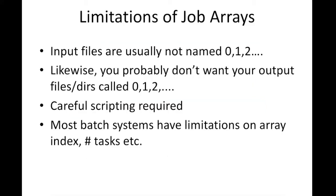You can see that job arrays can be powerful — you write one batch script and use it to run a large number of subjobs. But there are limitations. Your input files are unlikely to be named 0.fastq, 1.fastq, and so on, so either you'd have to rename all your input files or change the script to handle the actual file names. Likewise, you probably don't want output files called 0, 1, 2, and so on. Careful scripting is needed, and most batch systems also have limitations on the array index and number of tasks.